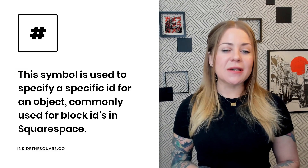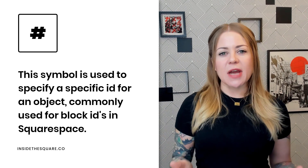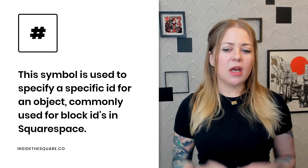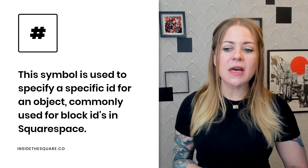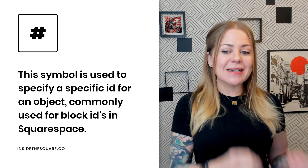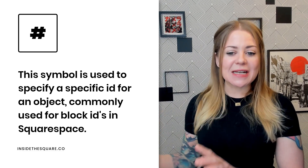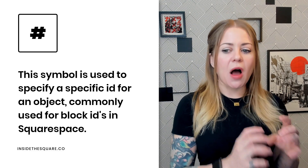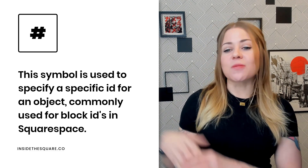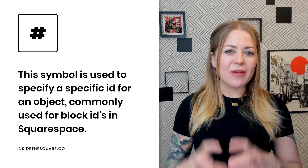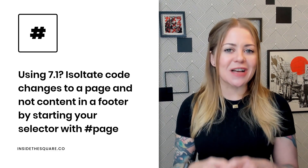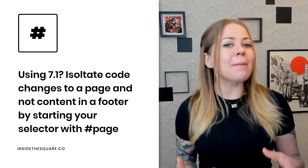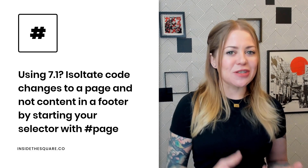You'll likely encounter a hashtag or pound symbol as well. These are used to specify a unique ID for an object. Every single item in a Squarespace website gets a unique block ID. So if you're using code to tell a browser when you see this specific object, make this style change, you need to start that code with the hashtag symbol. It's a great trick for anyone using a personal plan to make a CSS change to a single item, since it will only change that individual block ID — no page header code injection required. In Squarespace 7.1, you can also isolate changes to just a page by saying hashtag page at the start of your code, so the code won't affect the footer.